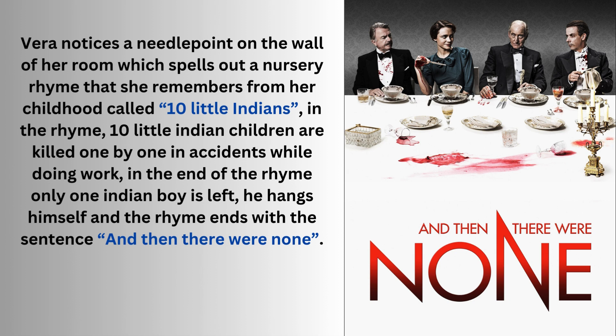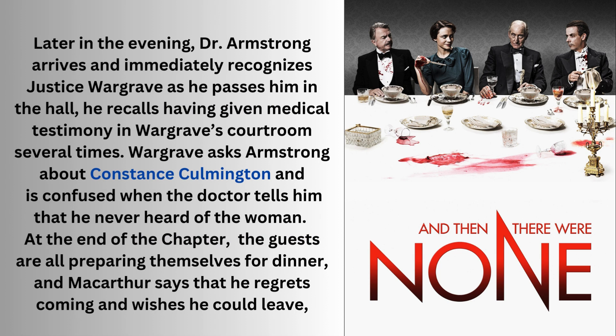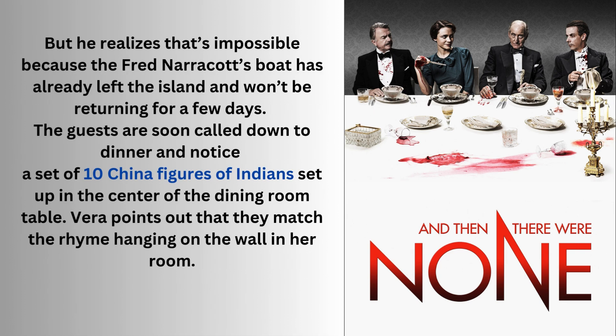In the rhyme, ten little Indian children are killed one by one in accidents while doing work. In the end of the rhyme only one Indian boy is left — he hangs himself and the rhyme ends with the sentence 'and then there were none.' Later in the evening, Dr. Armstrong arrives and immediately recognizes Justice Wargrave. Wargrave asks Armstrong about Constance Culmington and is confused when the doctor tells him he never heard of the woman. MacArthur says he regrets coming and wishes he could leave, but realizes that's impossible because the boat has already left the island. The guests are called down to dinner and notice a set of ten China figures of Indians set up in the center of the dining room table. Vera points out that they match the rhyme hanging on the wall in her room.